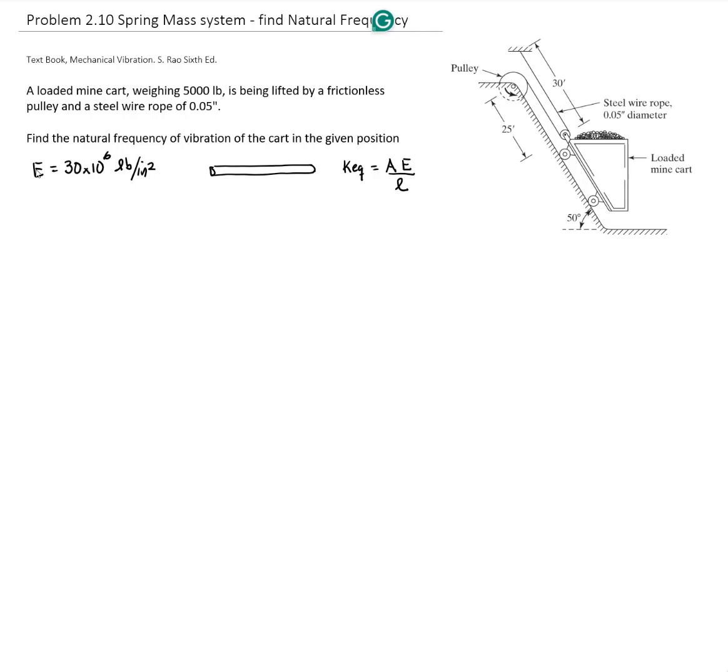Here we have two ropes, so let's create a mechanical system that represents our model. We have a slope at 50 degrees, a mass, and two springs. Each rope represents a spring: K1 and K2.